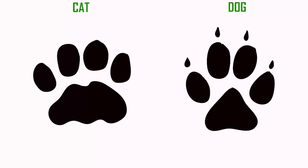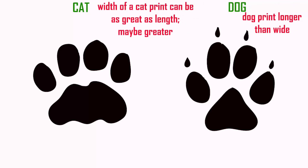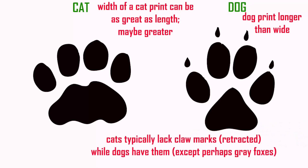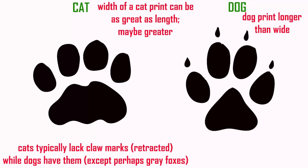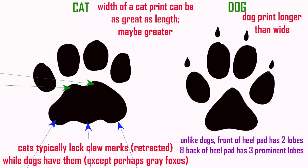While cat and dog prints both possess only four digits, they also have differences. Cat prints tend to be wider — the width is as great as the length or may be greater — while dog footprints tend to be longer than wide. Cats typically lack claw marks because their claws are retracted while walking, while we see claw marks in dog footprints, perhaps except for gray foxes, which can also partially retract their claws. Unlike dogs, cat footprints show two lobes in the front of the heel pad on both the front and hind legs, and the back of the heel pad has three prominent lobes. In dogs, we do not see two lobes in front, and if there are three lobes in back, as in coyotes, the lobes are small.